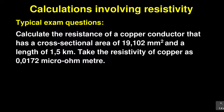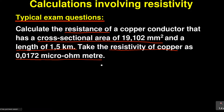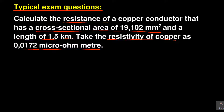Now let us look at typical exam questions — something you might expect in an exam concerning calculations on resistivity. The question says: calculate the resistance of a copper conductor that has a cross-sectional area of 19,102 millimeters squared and a length of 1.5 kilometers. There are very key things in this question.